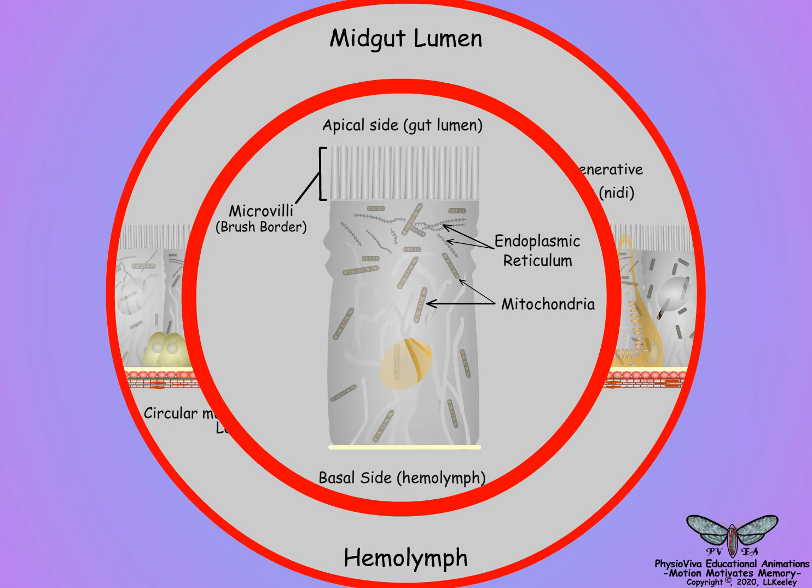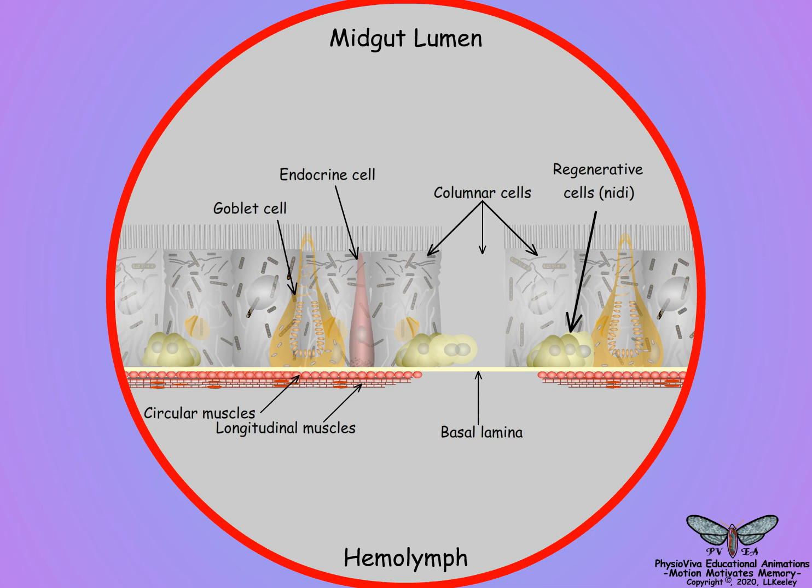On the basal side there are extensive infoldings of the basal plasma membrane to increase the surface area for release of absorbed nutrients to the hemolymph. Columnar cells are short-lived and are replaced every two to five days by regenerative cells located at the base of the columnar cells, sometimes found in clumps called nidi.